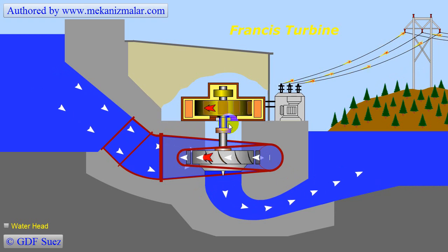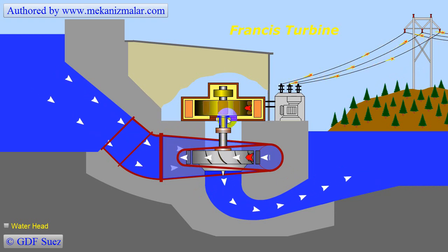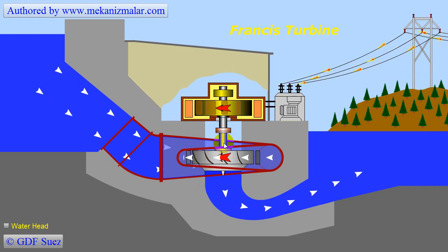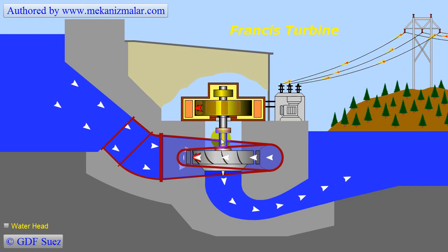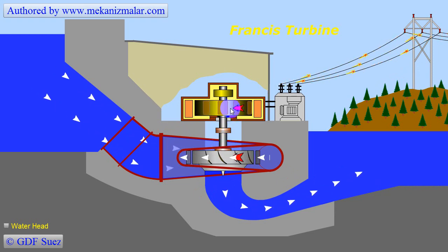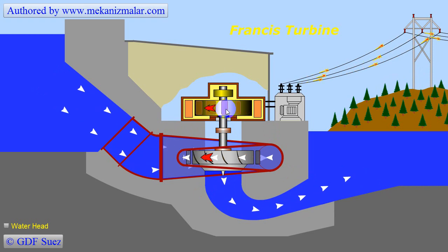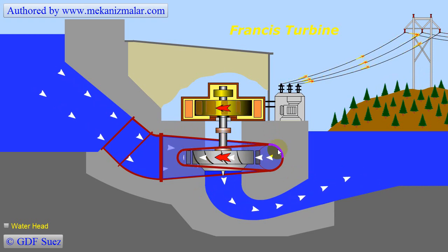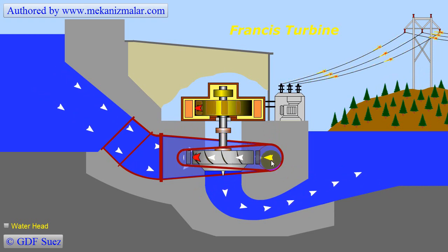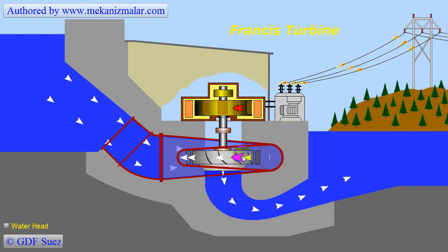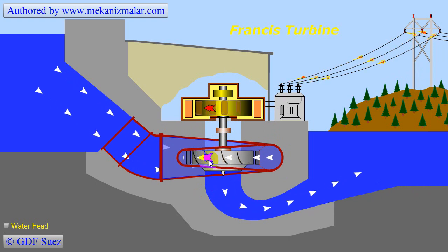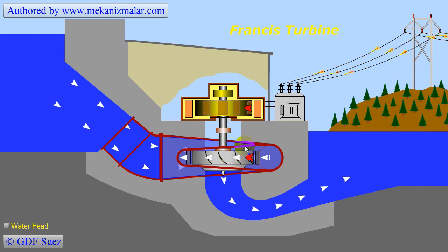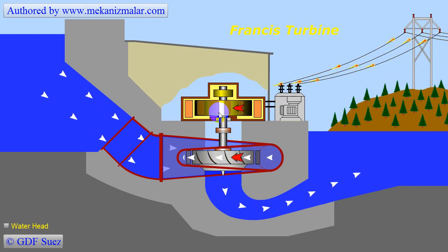The turbine shaft of the Francis turbine is almost always mounted vertically. This makes discharge of the water much easier due to the swirling effect of the water in the inlet scroll and the effect of gravity.